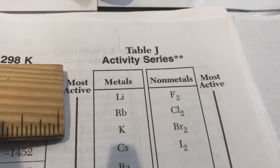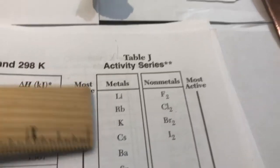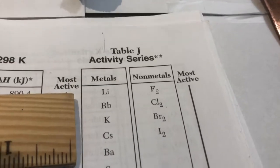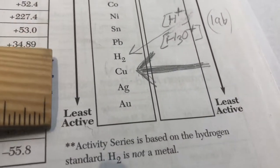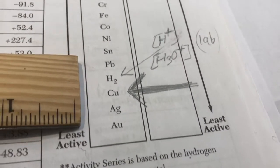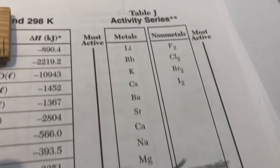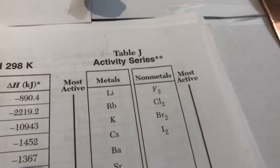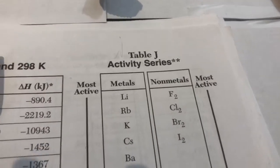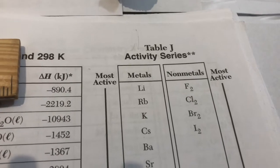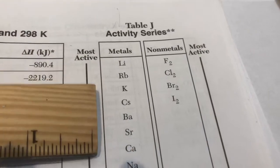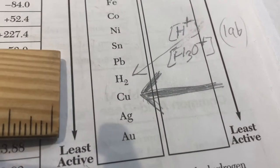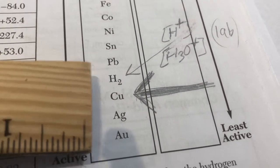In terms of Table J, what do they mean by activity? It means the ability to lose electrons more easily. So these guys are more easily oxidized, and the guys at the bottom are less easily oxidized.